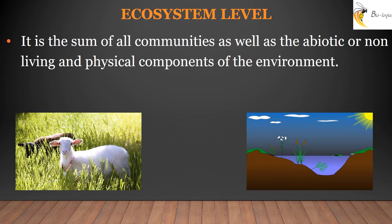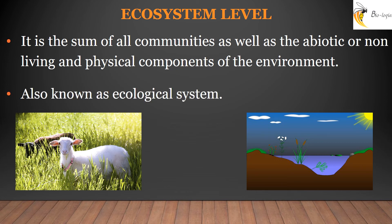An ecosystem is the total of all living organisms and their interaction with the non-living and physical components of the environment. Ecosystem is also known as an ecological system. Every organism has to play its own specific role in the ecosystem. Rivers, streams, and lakes are some examples of ecosystems.